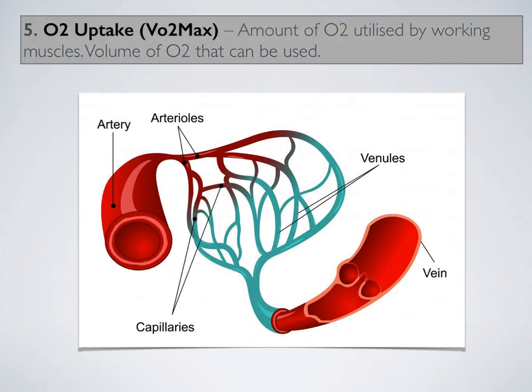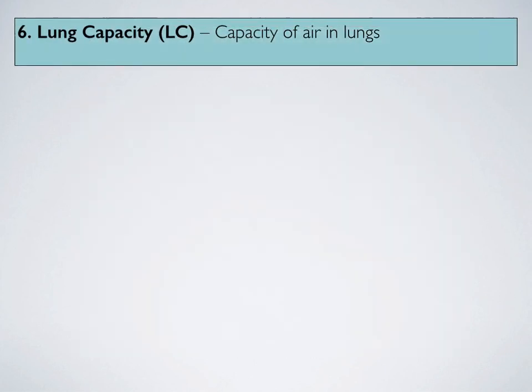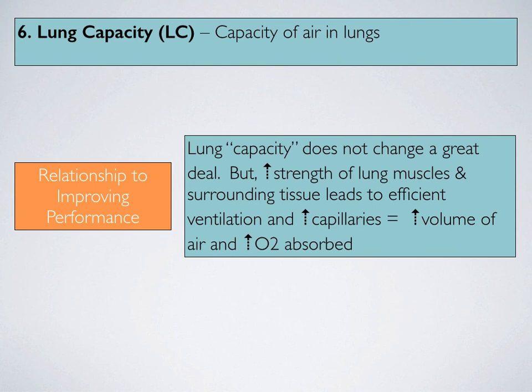You can see in this image the breakdown of the arteries, arterioles, and capillaries. The capillaries, of course, is where the gas exchange occurs, and this contributes considerably to oxygen uptake. The capillaries actually increase in size, improving the efficiency of oxygen delivery. Lung capacity refers to the capacity of air in the lungs. Lung capacity itself does not change a great deal as a result of training; however, an increase in strength of the lung muscles and the surrounding tissue leads to greater ventilation — the capacity to take in more air and thus more oxygen. There is also an increased amount of capillaries available in the alveoli, which increases the amount of oxygen that can be absorbed.